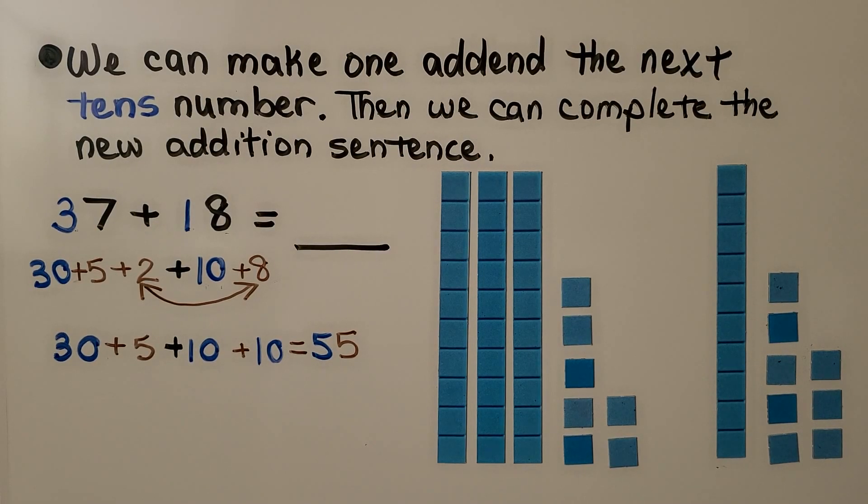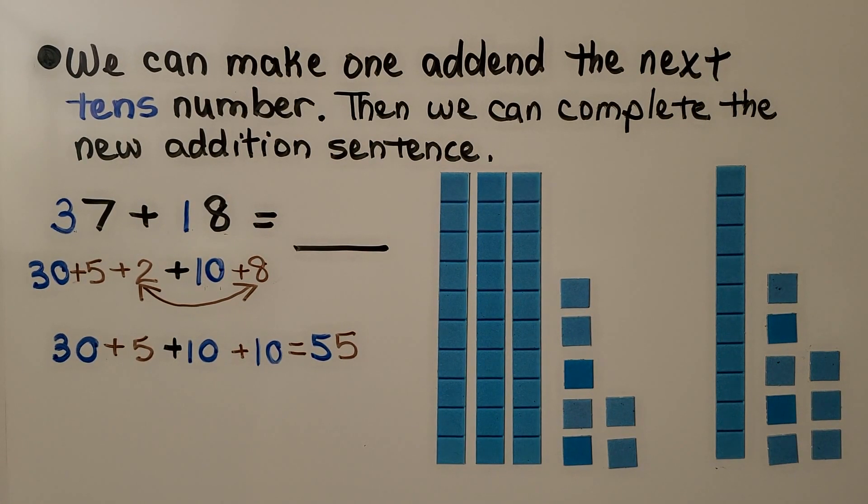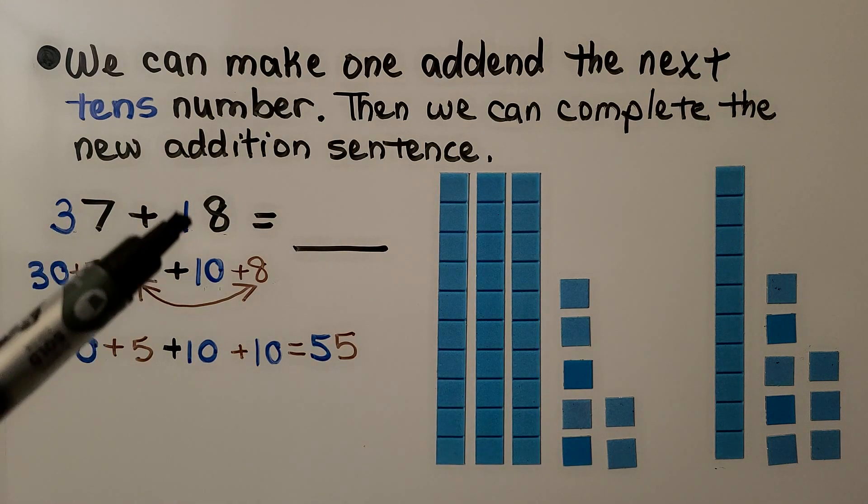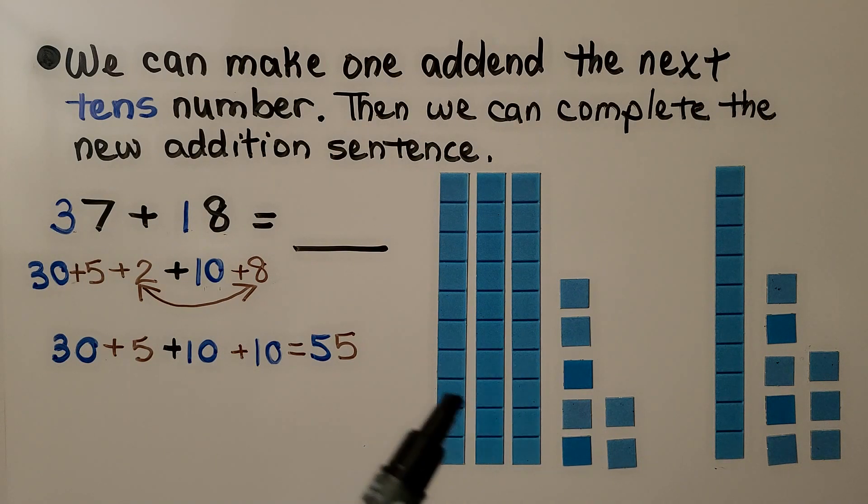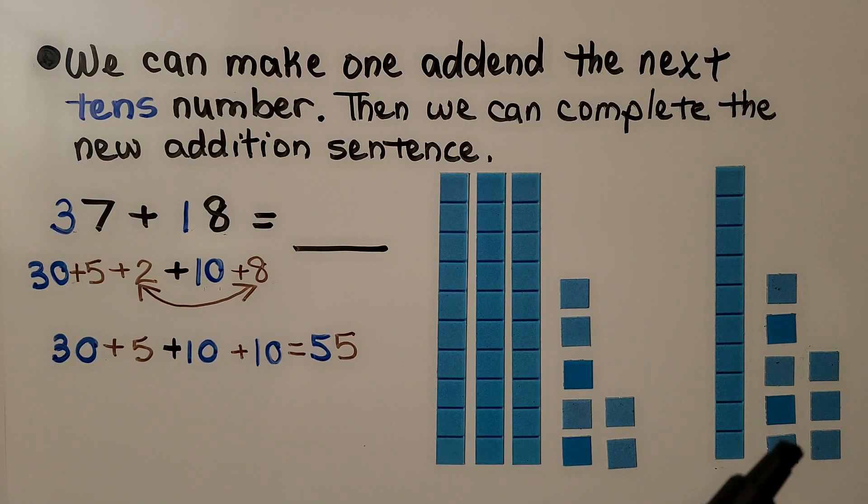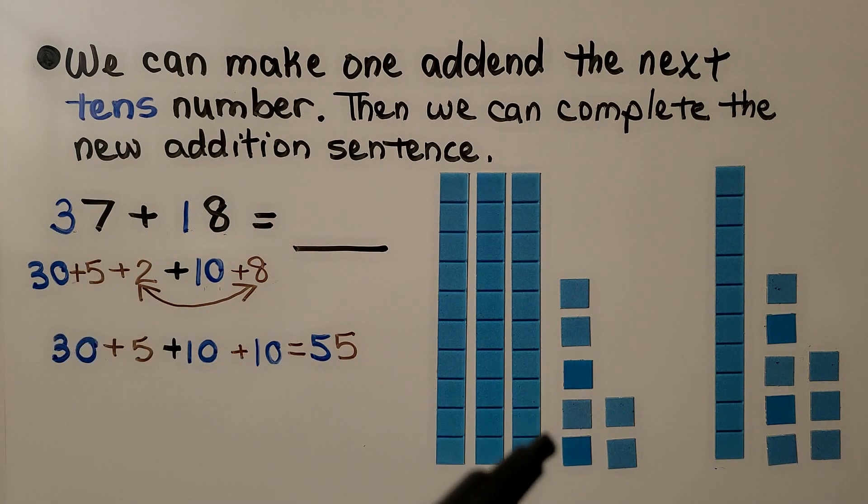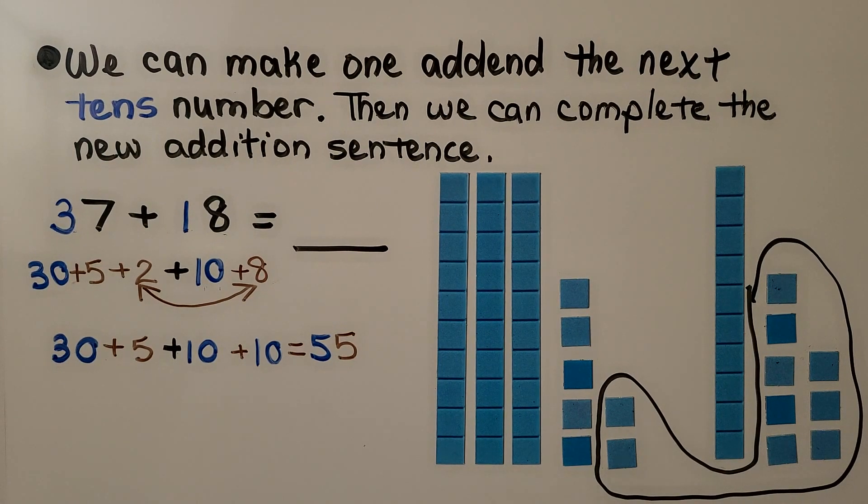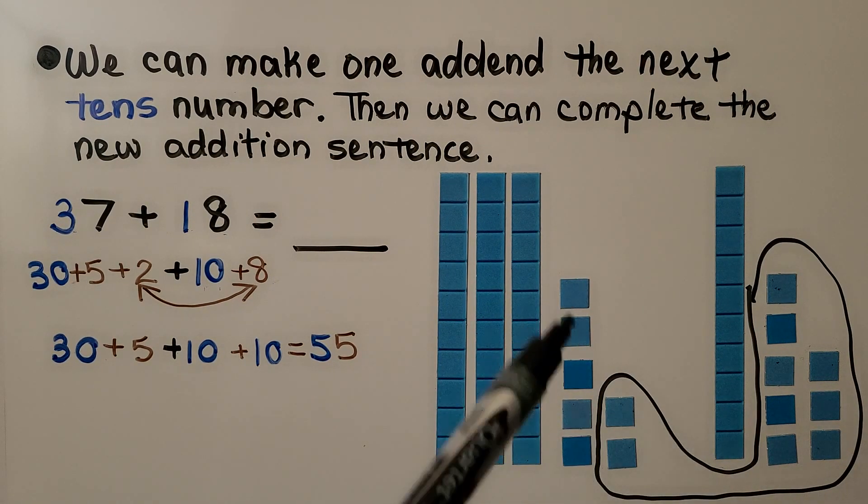We can make one addend the next tens number. Then we can complete the new addition sentence. Here we have 37 plus 18. We have three tens, seven ones, and we have one ten, eight ones. We can take two of these ones and make a ten with these eight ones. Now we've got three tens, four tens, five tens, and some ones.